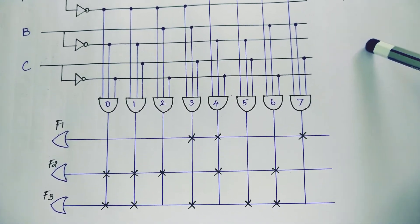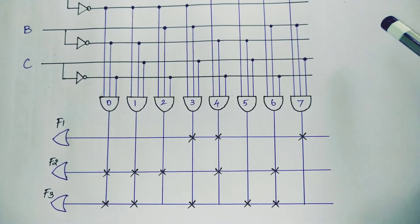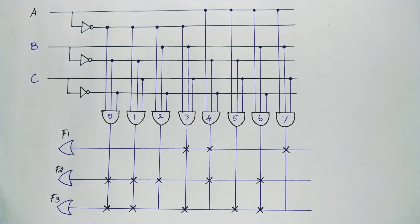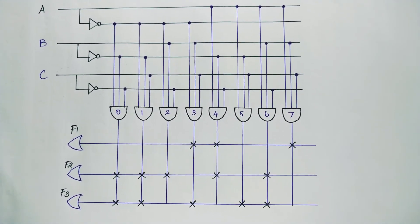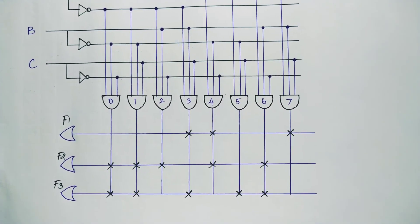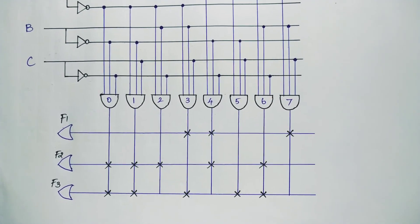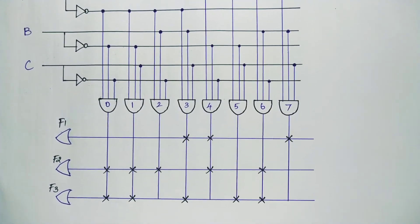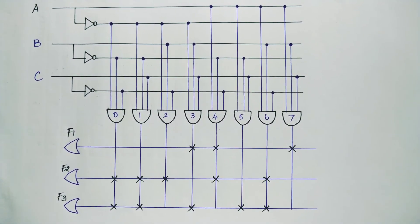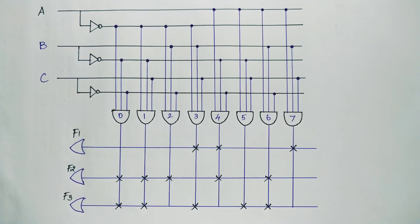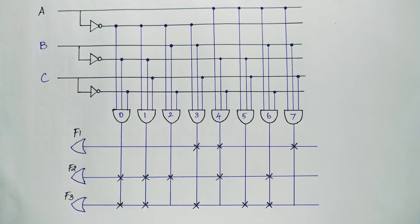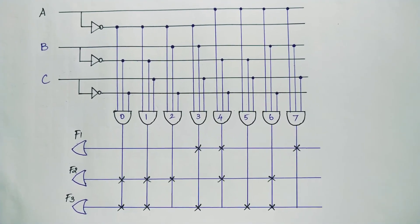This is how we draw the ROM structure. Remember carefully which gate is fixed and which gate is fusible, because for different programmable logic devices — ROM, programmable logic array, and programmable array logic — there are different connections. Thank you.